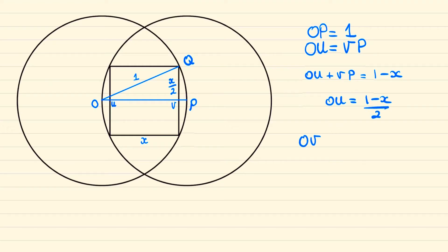We can figure out that o to v will be o to u plus u to v. We just figured out that o to u was 1 minus x over 2, u to v is x, so the sum of these becomes x plus 1 over 2.